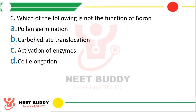Question 6: Which of the following is not the function of boron? Pollen germination, carbohydrate translocation, activation of enzymes, or cell elongation. The correct answer is Option C — boron has no function in activation of enzymes. The other three — pollen germination, carbohydrate translocation, and cell elongation — are functions in which boron plays an important role.